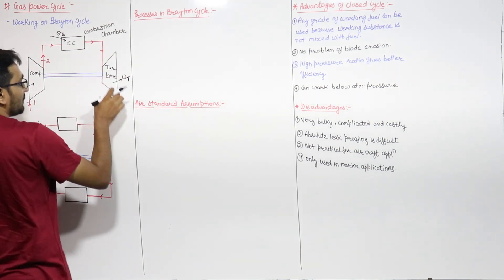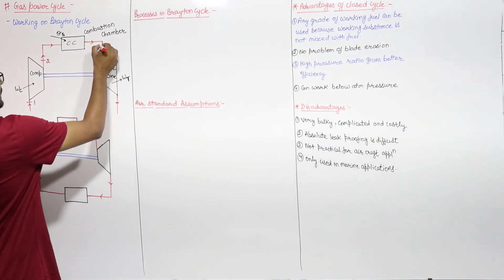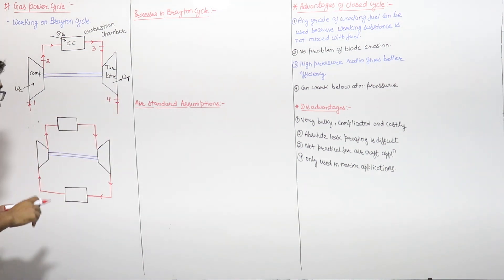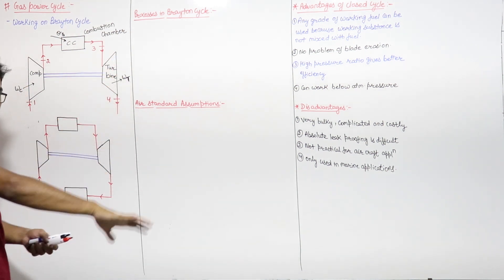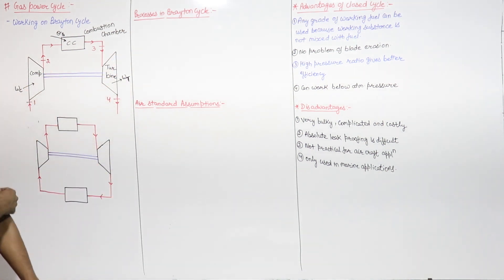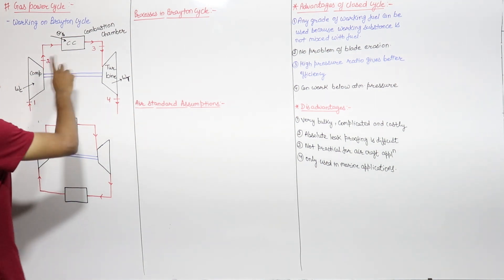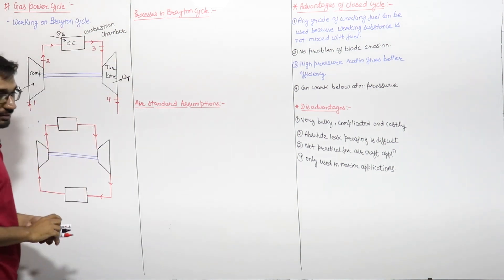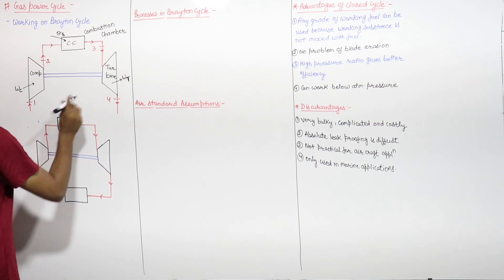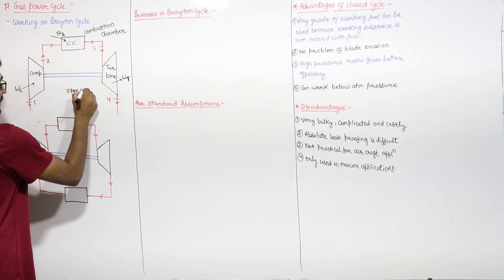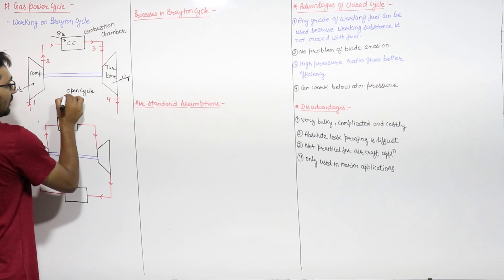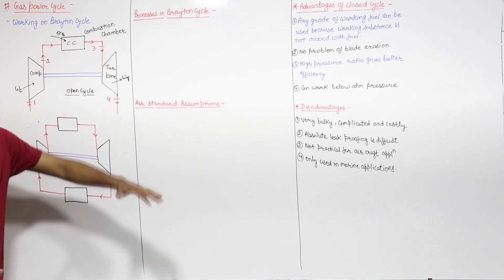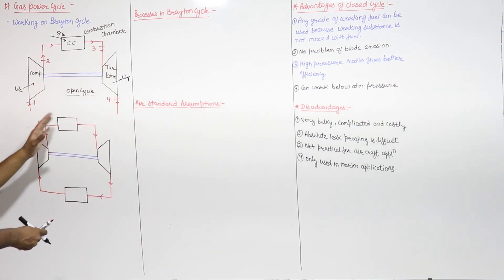After the expansion process, let us say this is point 0.3, and after expansion, let us say this is point 0.4. The working substance will go to the surrounding. Then after one cycle, in the next cycle, new working fluid will enter and the same process will happen. So this is an open cycle — in which after each and every cycle, new working substance enters into the system, executes the process, and is rejected to the surrounding.